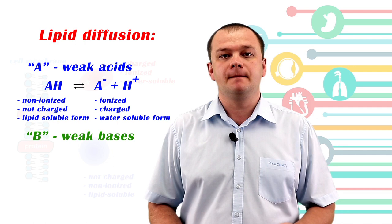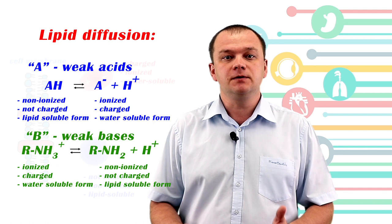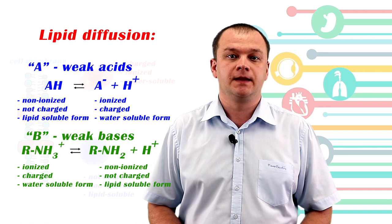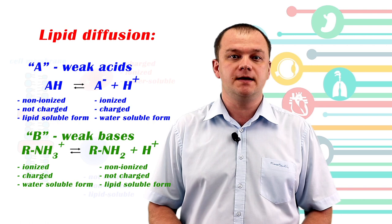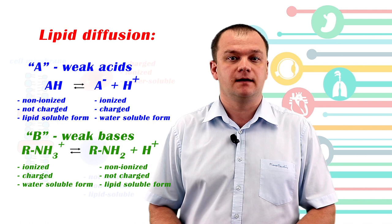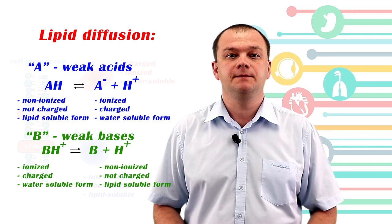In the case of weak bases, they are proton acceptors — molecules able to accept hydrogen protons and become ionized or exist in charged form. The ionized or charged (protonated) form of a base is better renally cleared, while the uncharged (deprotonated) form better penetrates through the lipid membrane.